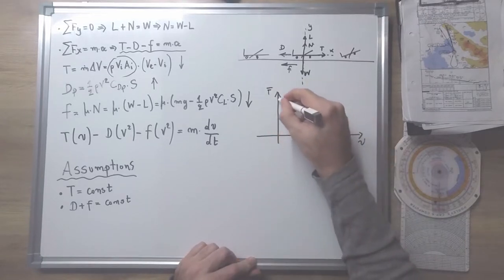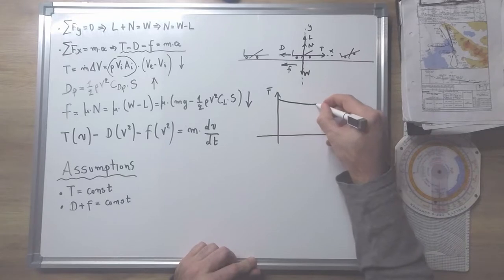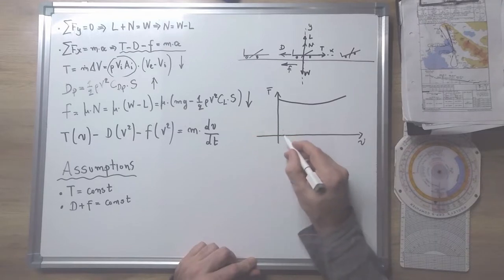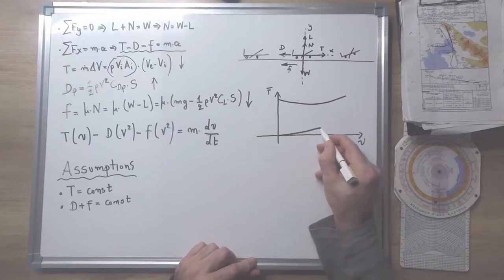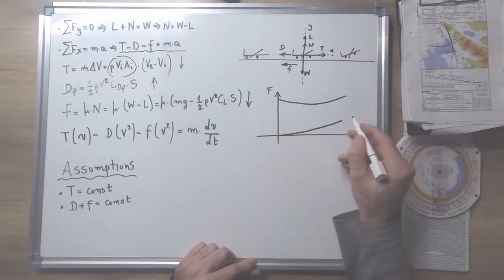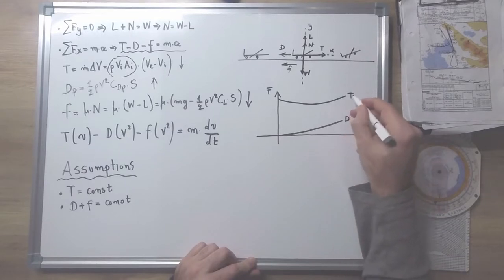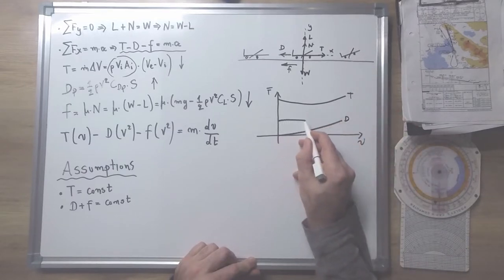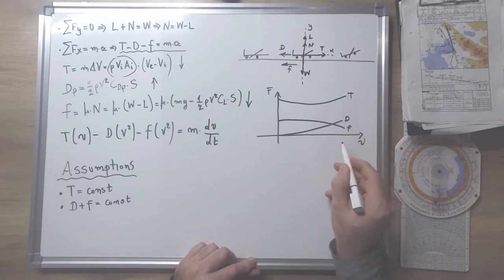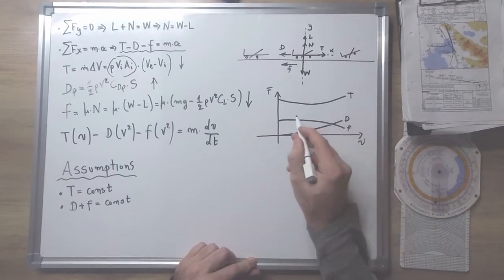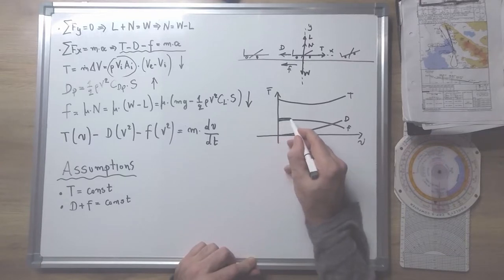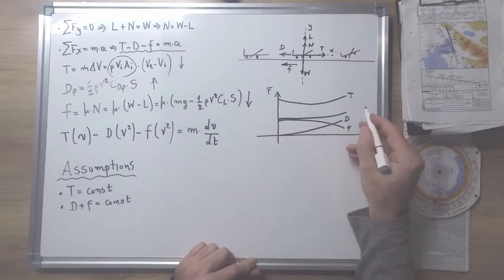Let's see where those assumptions are based. The thrust during the takeoff roll has a slight decrease and then increases; the aerodynamic drag increases with speed; and the friction is decreasing. But the sum of those two forces — drag and friction — we can say is almost constant.